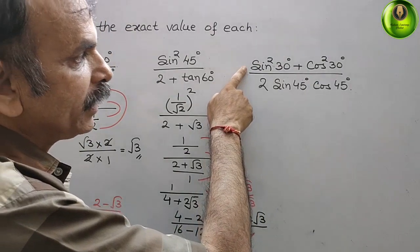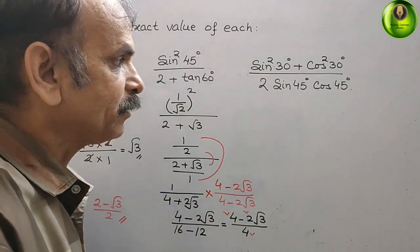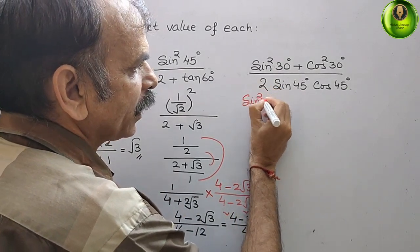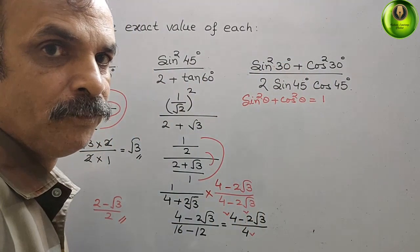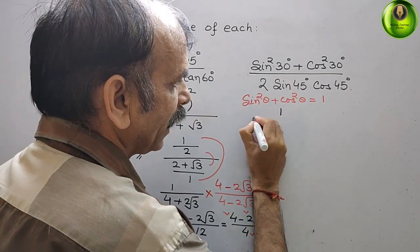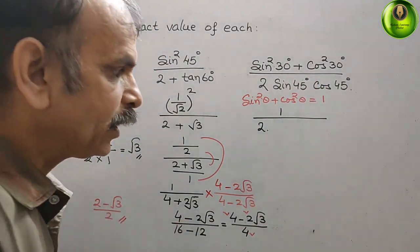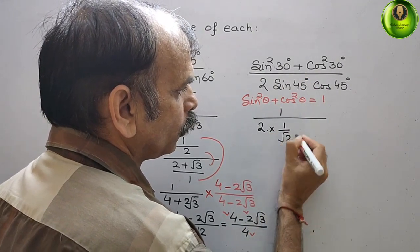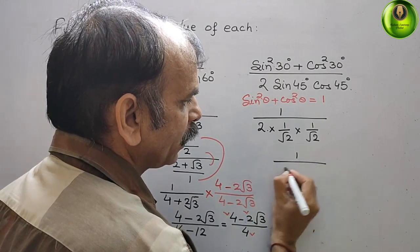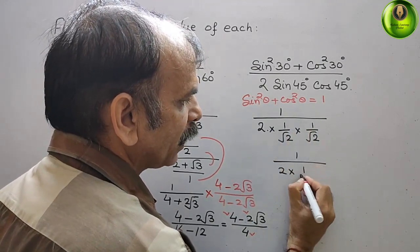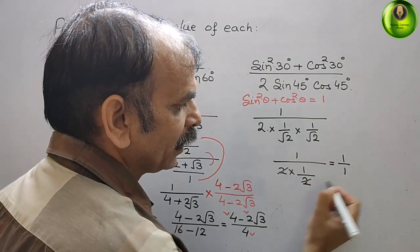Here it is: sin square 30 degree plus cos square 30 degree. We know one identity — sin square theta plus cos square theta is equal to 1. So therefore this value will be 1 only. So we put 1 by 2. Now sin 45 degree is 1 by root 2, into cos 45 degree which is again 1 by root 2. So this is 1 by 2 into 1 by root 2 into 1 by root 2 — 1 into 1 is 1, root 2 into root 2 is 2. So 2 and 2 cancel, and you get 1 by 1, that is equal to 1.